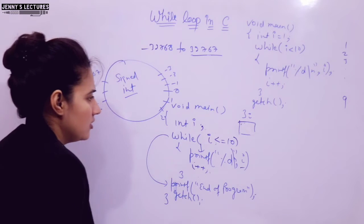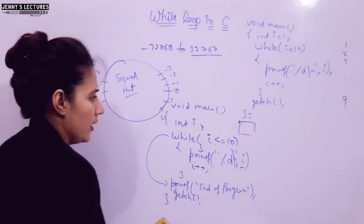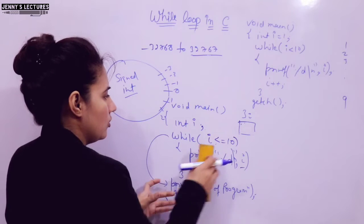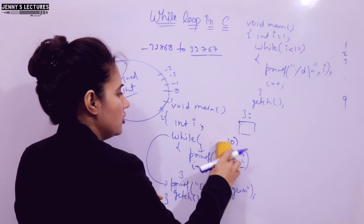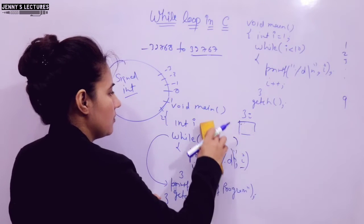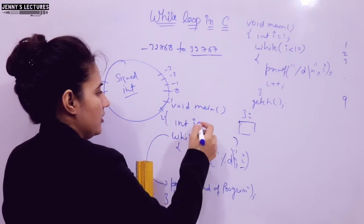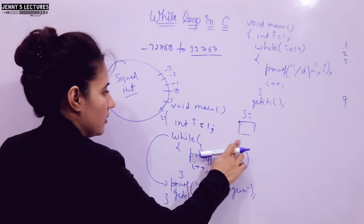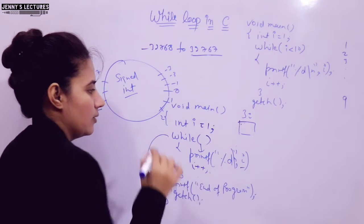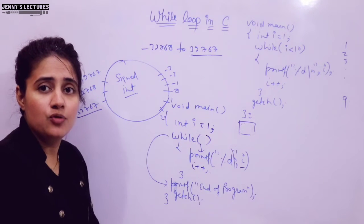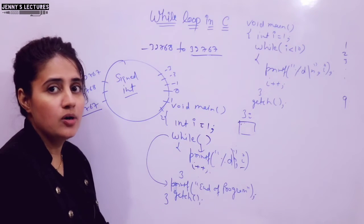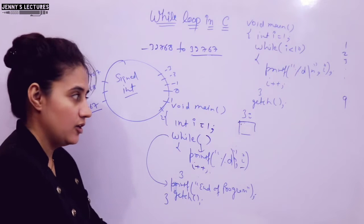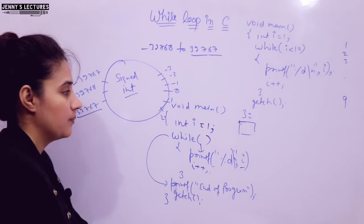If you initialize `i = 1` but write no condition at all in the while loop — `while()` with empty parentheses — it will give you a compile-time error. That is not valid syntax.